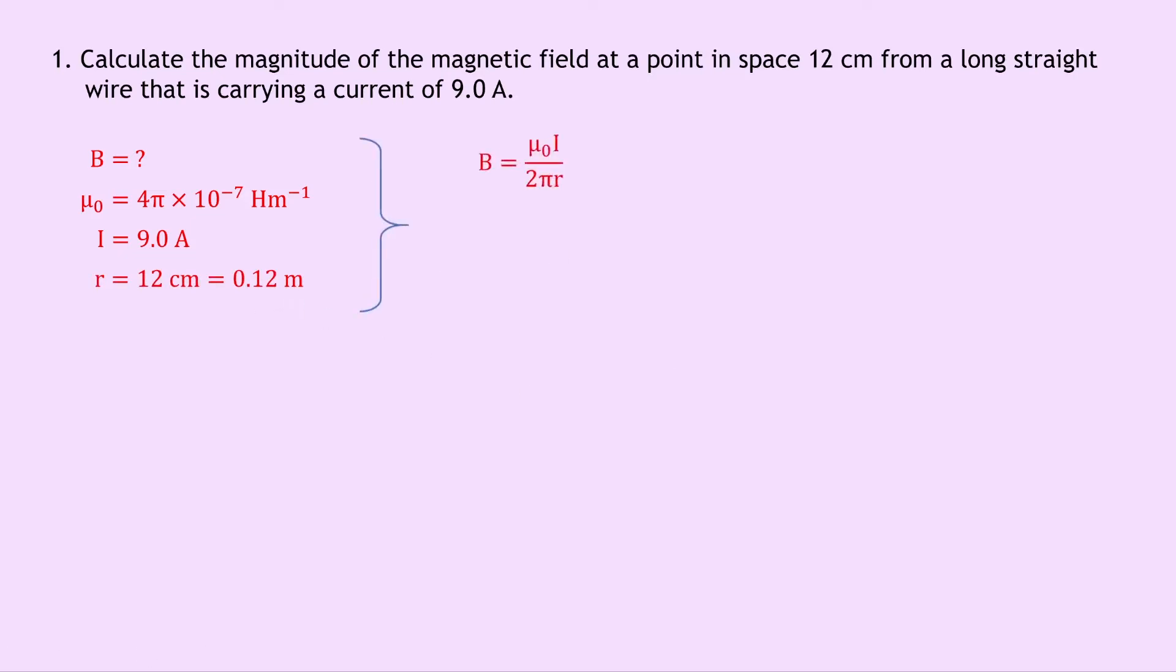So writing down our equation we have B = μ₀I / 2πr, and substituting in the numbers gives us (4π × 10⁻⁷) × 9.0 divided by 2π × 0.12. And putting that into your calculator should give you a final answer of 1.5 × 10⁻⁵ tesla.